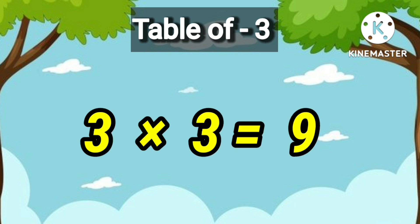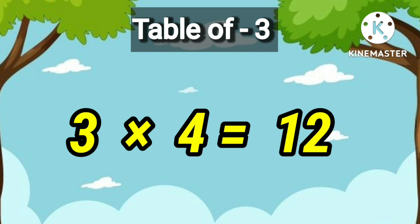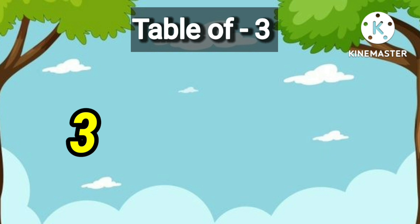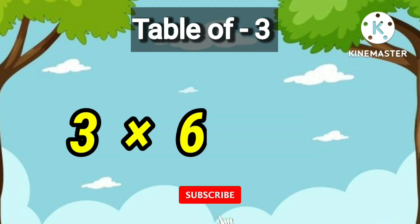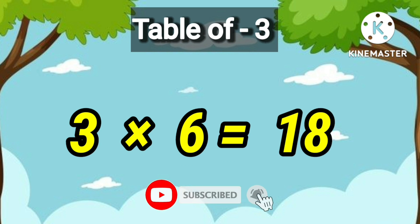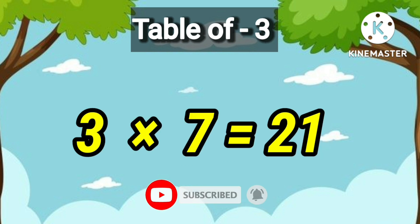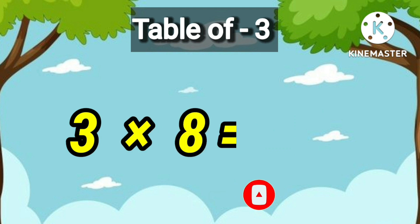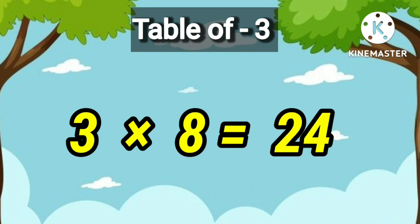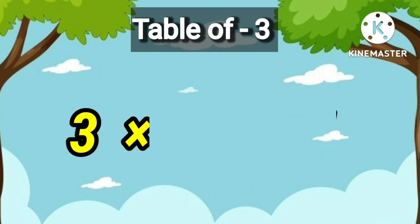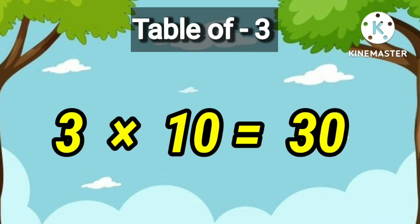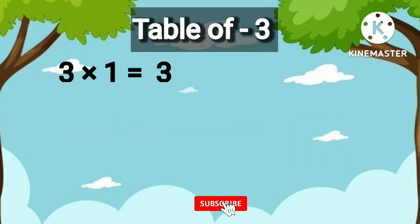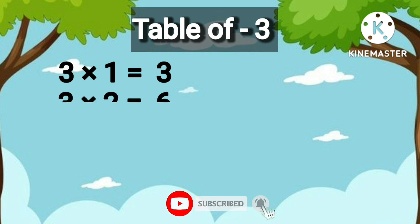3 3's are 9, 3 4's are 12, 3 5's are 15, 3 6's are 18, 3 7's are 21, 3 8's are 24, 3 9's are 27, 3 10's are 30.